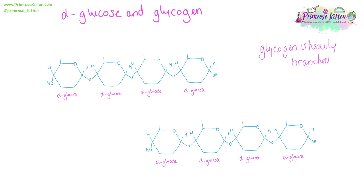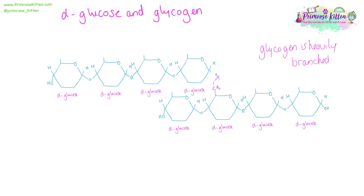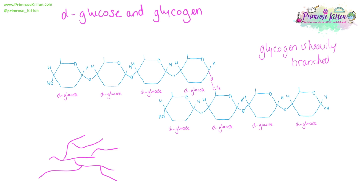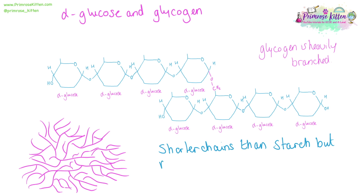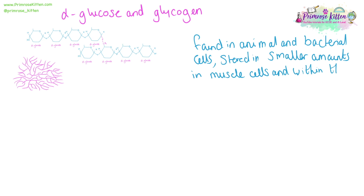Glycogen is heavily branched. To get those branches, we need to look at slightly different parts of the molecule and how it joins up — not in a straight line. We get the same condensation reaction, the same glycosidic bond being formed, but it is forming a branch. The chains and branches are going to be shorter than in starch, but there are going to be more overall branches. Glycogen is found in animal and bacterial cells, as opposed to starch which is found in plant cells. It is stored in smaller amounts in muscle cells and within the liver.